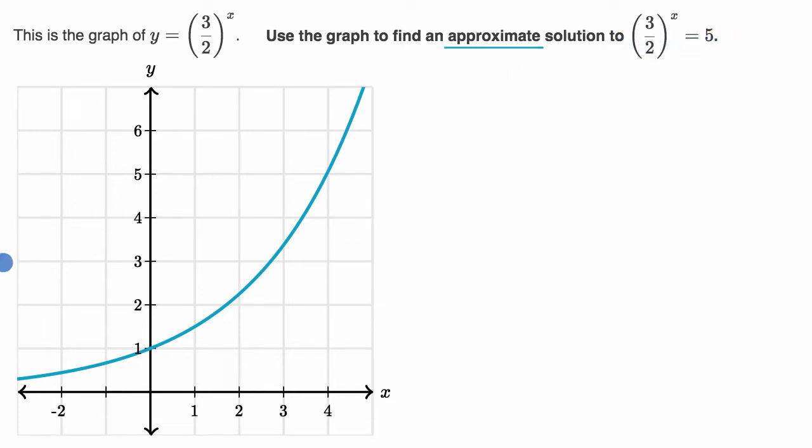The way we could do that is we could take each side of this equation and set them up as a function. We could set y equal to each side of it. So if we set y equal to the left-hand side, we get y equals three halves to the x power, which is what they originally give us, the graph of that.